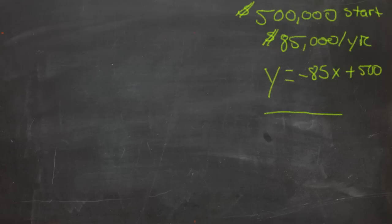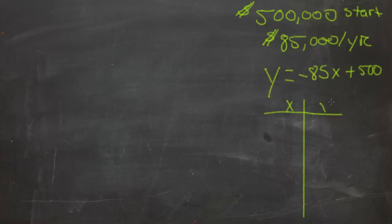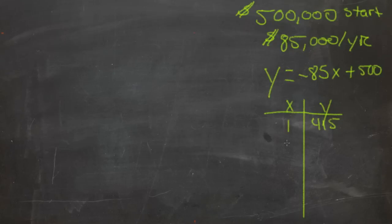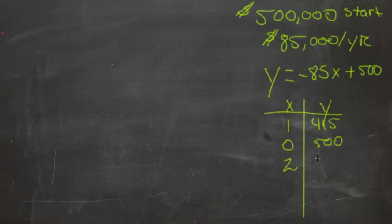Let's figure out how this equation would graph on a chart. On our XY graph: when x is zero, y is five hundred thousand; when x is one, y is four hundred and fifteen thousand; when x is two, y is three hundred and thirty thousand. Note that these values are in thousands — I just didn't want to bother writing all the zeros.